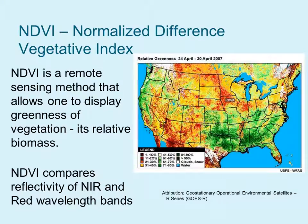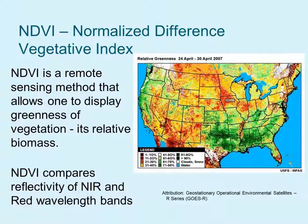So I've been using this term NDVI — what is it? It refers to the Normalized Difference Vegetation Index. NDVI is a remote sensing method that allows one to display greenness of vegetation.